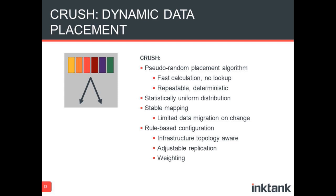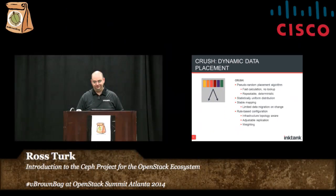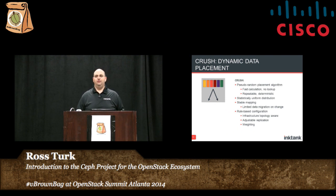To review: CRUSH is what we call a pseudo-random placement algorithm. It's not random, but it's pseudo-random. It's a fast calculation with no lookup. It's repeatable and deterministic — if you call it again with the same inputs, it will always give the same outputs. It gives you a statistically uniform distribution, and it's a stable mapping, meaning that when your cluster changes, very little of the mapping actually changes. If you have 100 nodes and lose one, you're moving data from 99 nodes to 99 nodes — only 1% of the data has to move. It's also rule-based: you set policies based on topology, weighting, and adjustable replication policies.